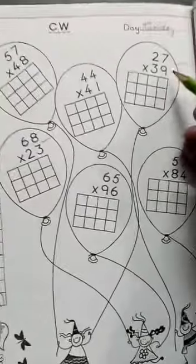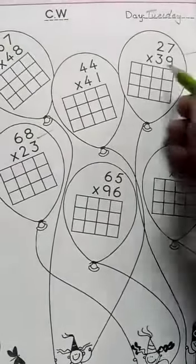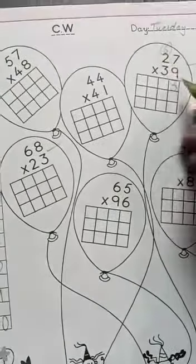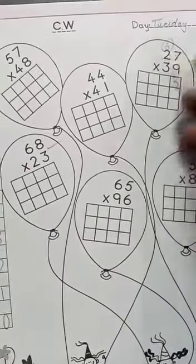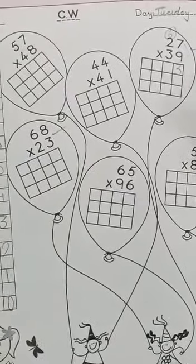First we have the table of 9. You have to do 9 sevens are 63. 63 will be 3 and 6 will be carried out. 9 twos are 18. 18 plus 6 is 24.